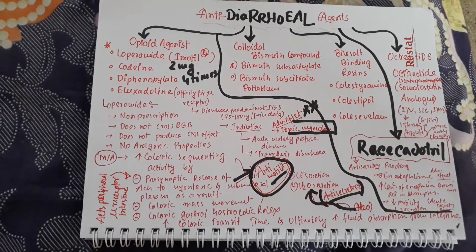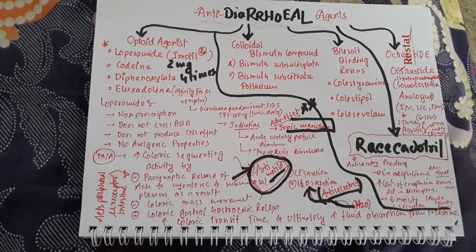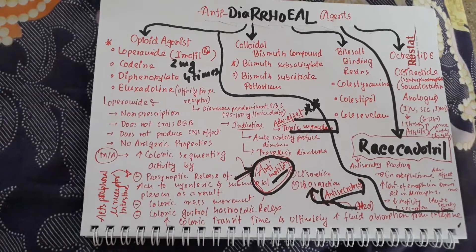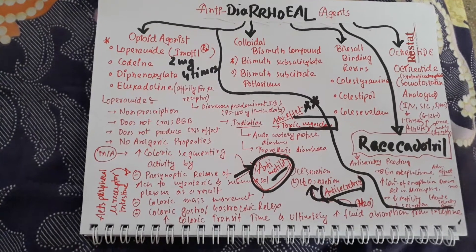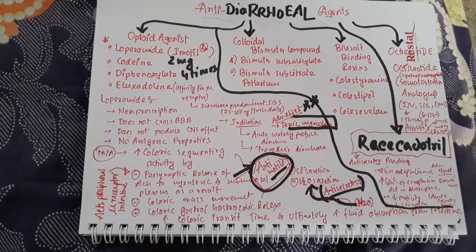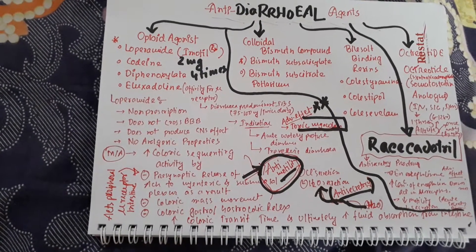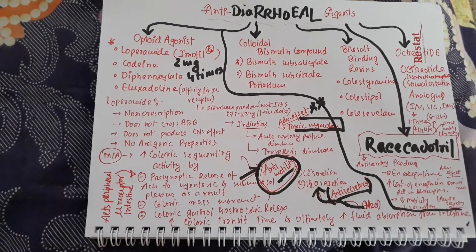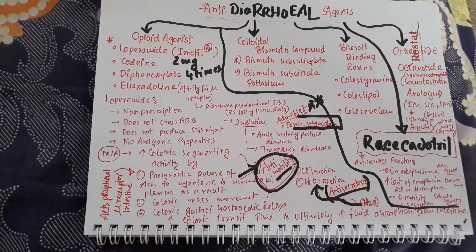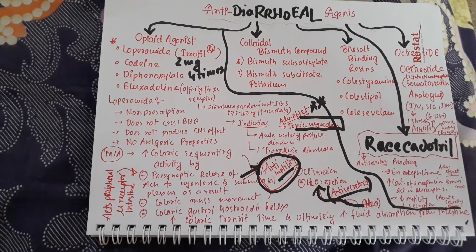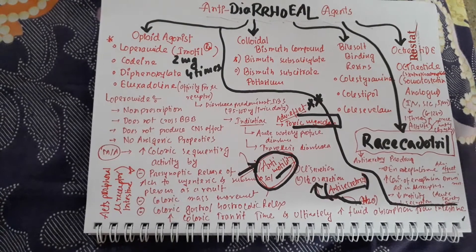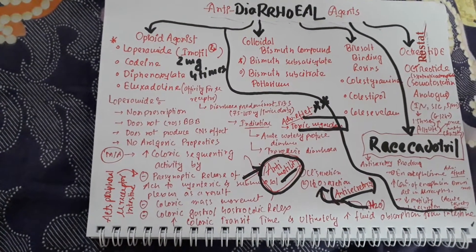Persistent diarrhea is diarrhea that occurs for more than 14 days, which occurs due to IBS, inflammatory bowel disease, Crohn's disease, ulcerative colitis, etc. The management plan of diarrhea includes non-specific therapy and specific therapy. In non-specific therapy, we use oral rehydration salts and anti-diarrheal drugs. Specific therapy for infectious diarrhea uses antibiotics. To correct dehydration, infusion agents such as cholera saline are used, and correction of the underlying cause may also be needed.